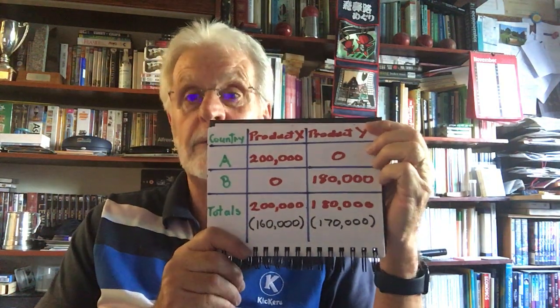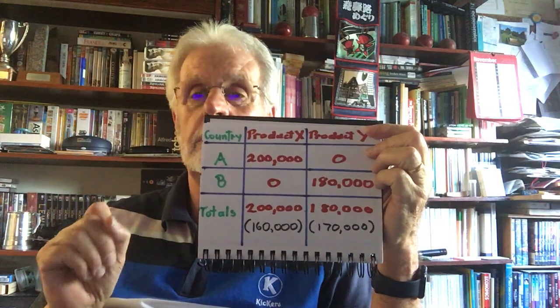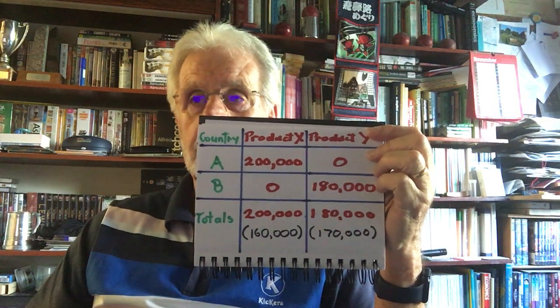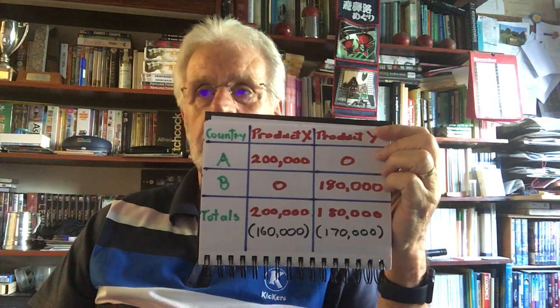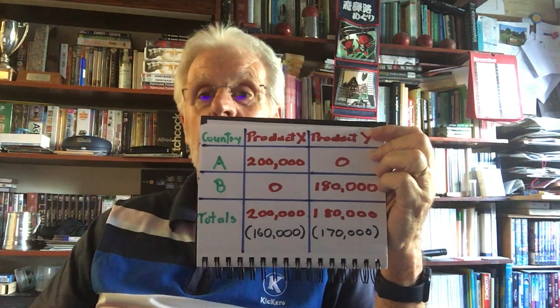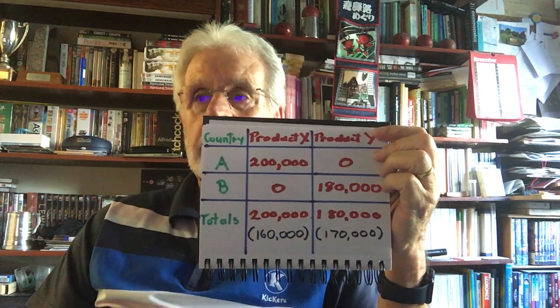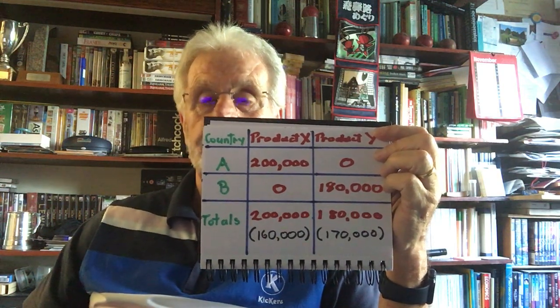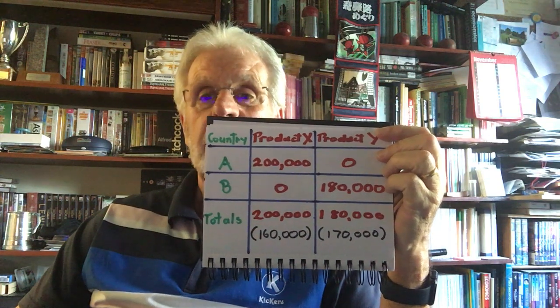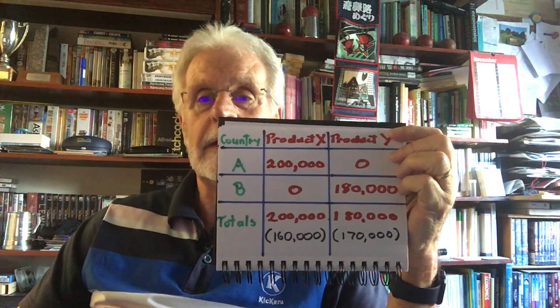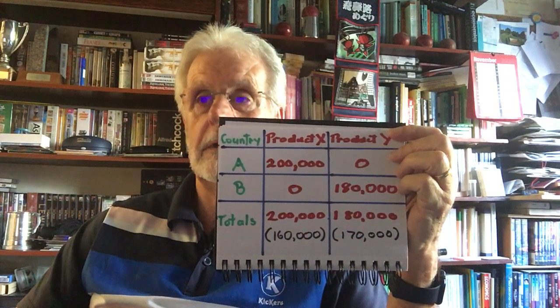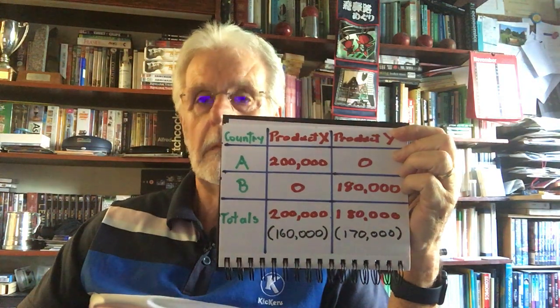With absolute advantage, if each country allocates all its resources to the product in which it has the absolute advantage, country A would produce 200,000 units of X and country B would produce 180,000 units of Y — an increase from 160,000 to 200,000 for X, and 170,000 to 180,000 for Y.